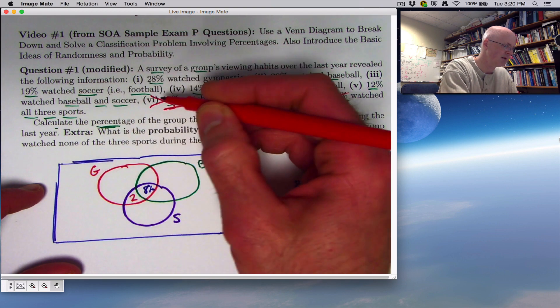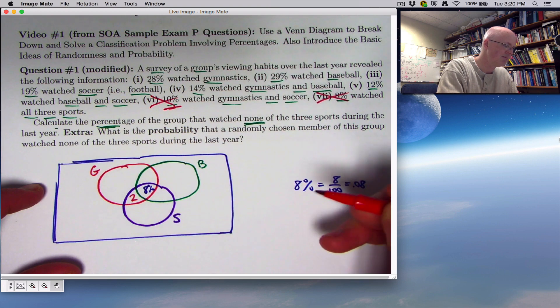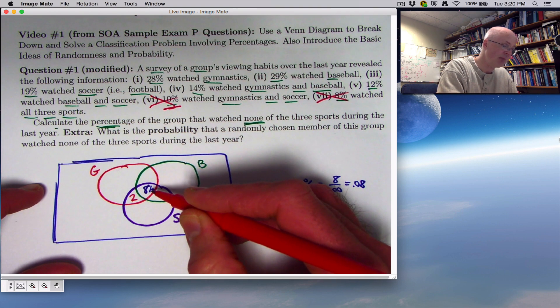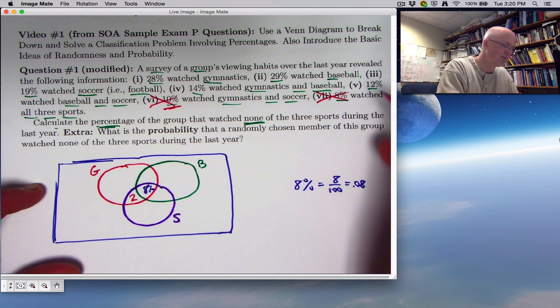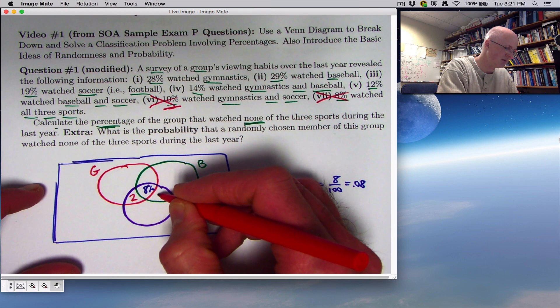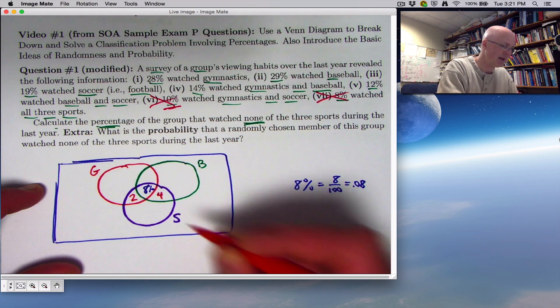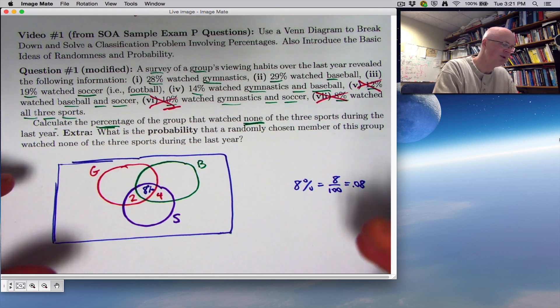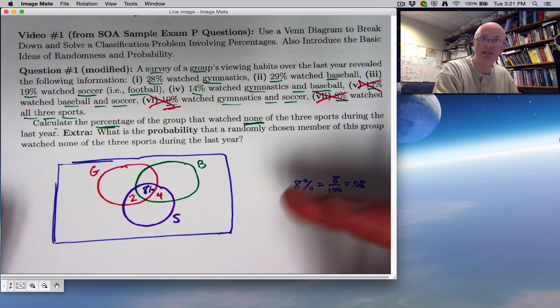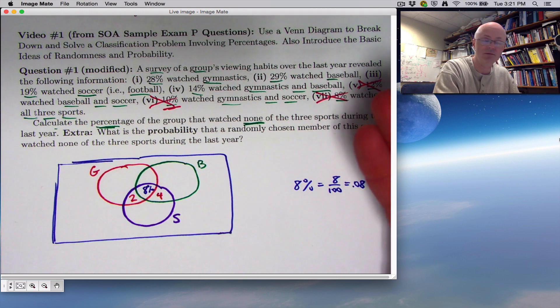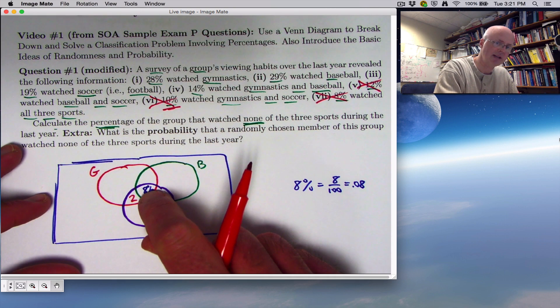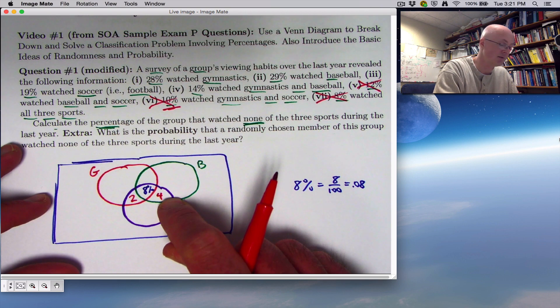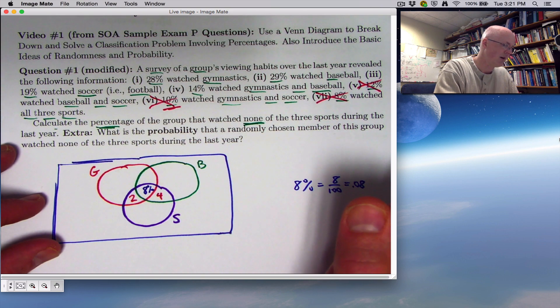That's important to realize that these numbers that I'm going to label in each section of this diagram are not necessarily the numbers that are shown up here, but numbers that I have to figure out. We've taken care of that now. Continue backwards. 12% watched baseball and soccer, the green and the purple. We already have accounted for 8%. So we need four more percentage points worth of people. Put a 4 there so that 8 plus 4 is 12.